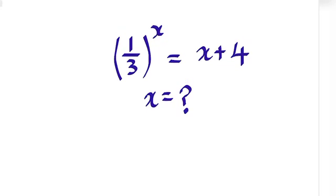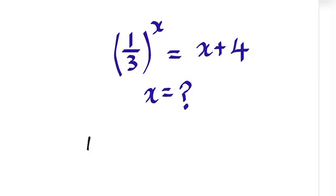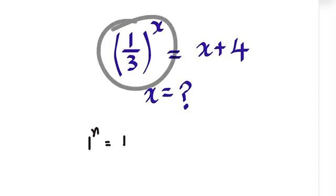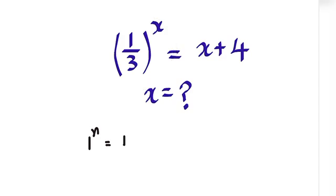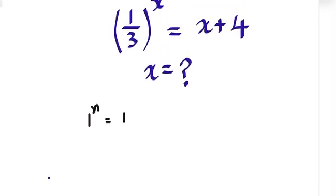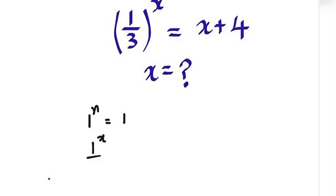I want you to remember that whenever you have 1 to the power of any number, that will give us 1. So remember that. From here, we can write that as 1 to the power of x divided by 3 to the power of x.